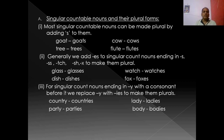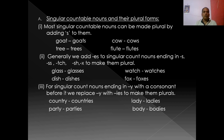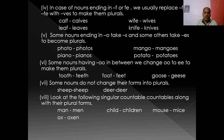Some singular countable nouns ending in Y with a consonant before it — we replace Y with I-ES to make them plural. For example: country → countries, where R is before Y, so we replace Y with I-ES. Party → parties, lady → ladies, body → bodies.